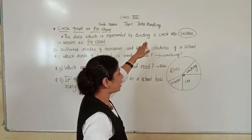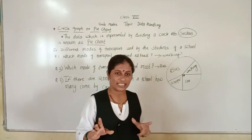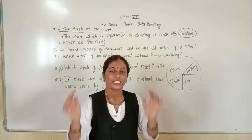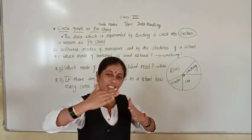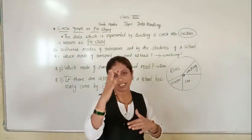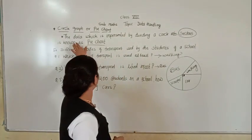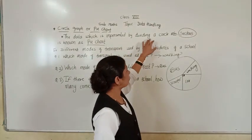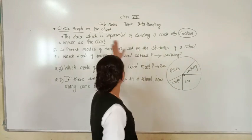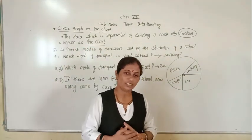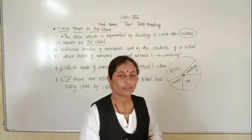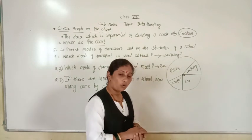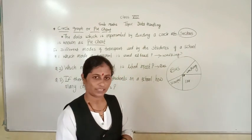Data is represented by dividing a circle into sectors. A sector is related to an angle, so we have to divide the circle into different sectors, meaning different angles. The data represented by dividing a circle into sectors is called a pie chart or circle graph. This graph shows the relationship between a whole and its parts.